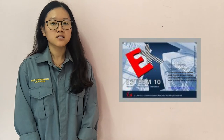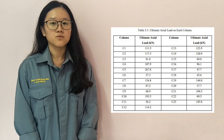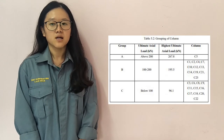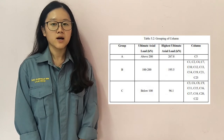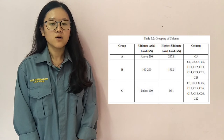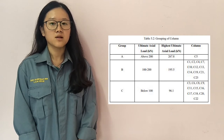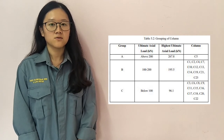For the column load, we are using ASTEM software to determine the axial load on each column. By referring to the column loads, we can group them into three groups: above 200kN, 100 to 200kN, and below 100kN.